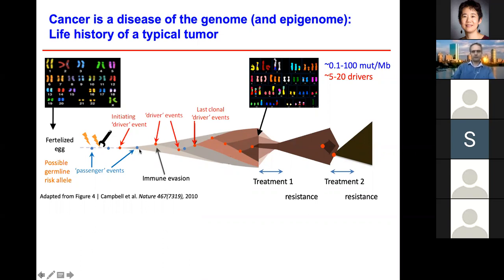These clones are not yet cancer — they are pre-cancer. They continue to grow, and at some point additional driver events could happen and eventually transform into cancer. The immune system may identify the clone and attack it, and there could be driver events that evade that immune response. Mutations that increase the fitness of cells are called drivers; all other mutations that don't increase fitness are called passengers.